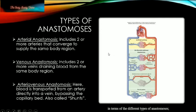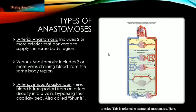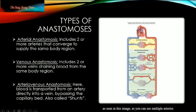In terms of the different types of anastomosis, we have anastomosis that involve multiple arteries, referred to as arterial anastomosis. Here, a particular body region receives blood from two or more arteries, as seen in this image. Multiple arteries converge together and branch to form arterioles, which then branch into capillary beds.